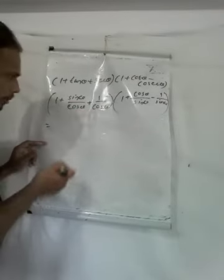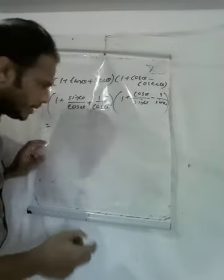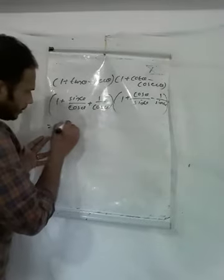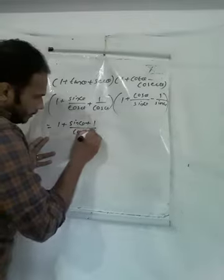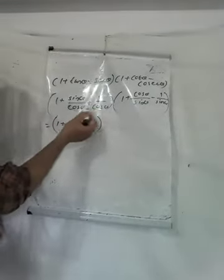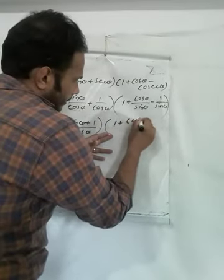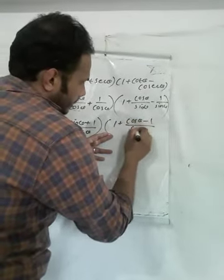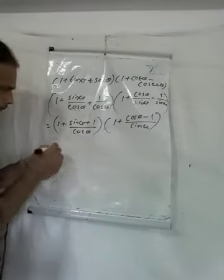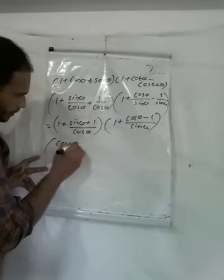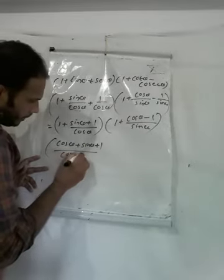cos θ is in the denominator. So you can cross-multiply. The denominator is the same for both terms. When you combine, you get: (1 + sin θ + 1) / cos θ, because the denominator is the same. And similarly: (1 + cos θ − 1) / sin θ. Because the denominator is the same, you can cross-multiply: cos θ + sin θ + 1, all over cos θ.